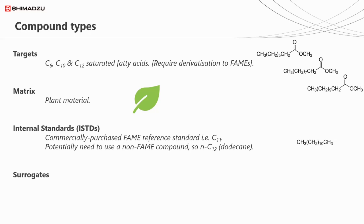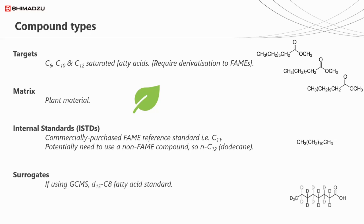Perhaps dodecane could be considered as an alternative. For our surrogate, we would ideally use a deuterated C8 fatty acid. For GCFID, we might have to consider using an alternative fatty acid that isn't present in the sample. If this isn't the case and information on recovery is required, GCMS might be the only viable option.